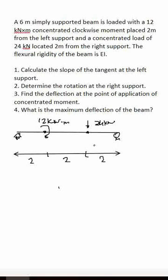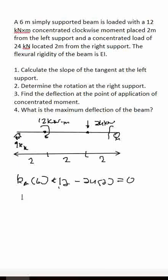Before proceeding to the double integration method, let's first solve the reaction at A. By taking the summation of moments at B, we get: RA times 6 plus 12 minus 24 times 2 equals 0. Solving this, our reaction at A, RA, equals 6 kN.